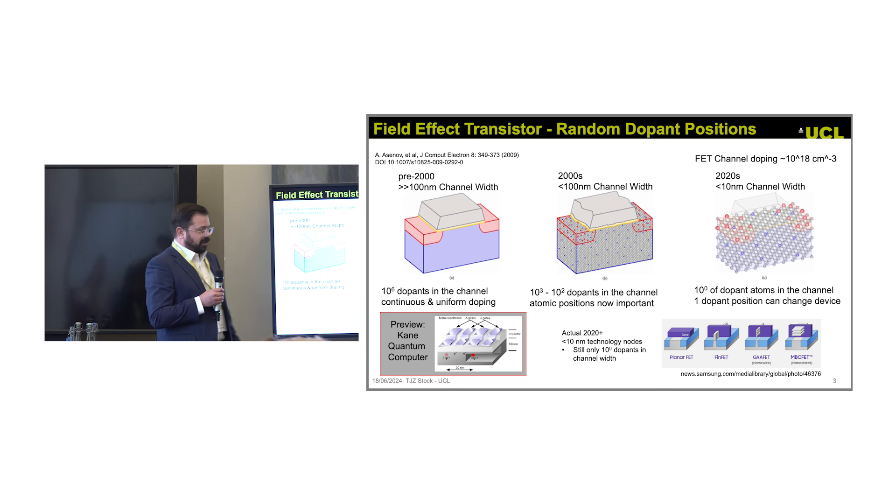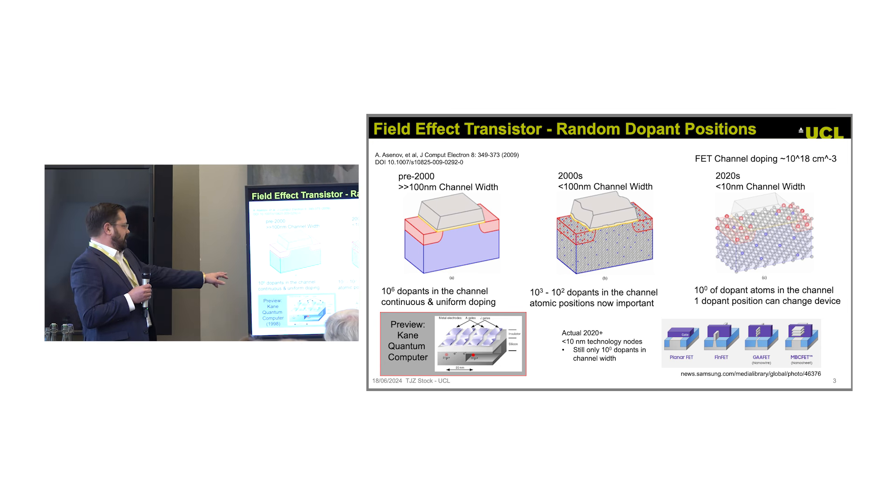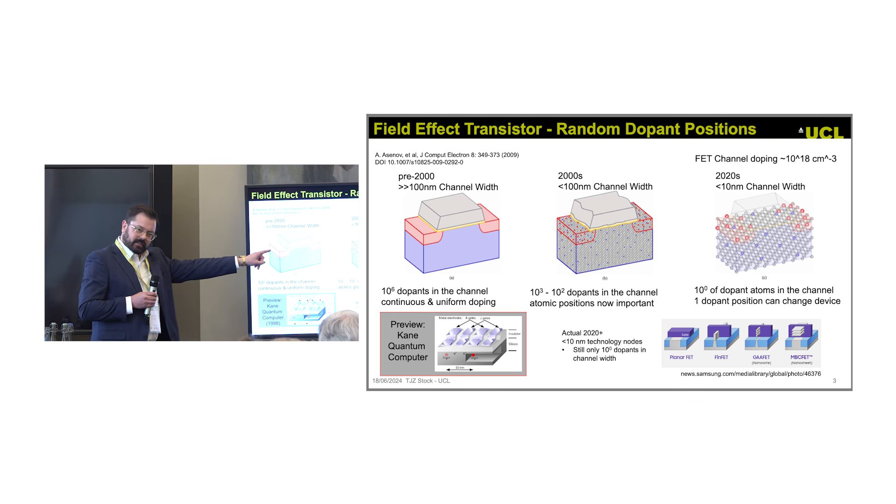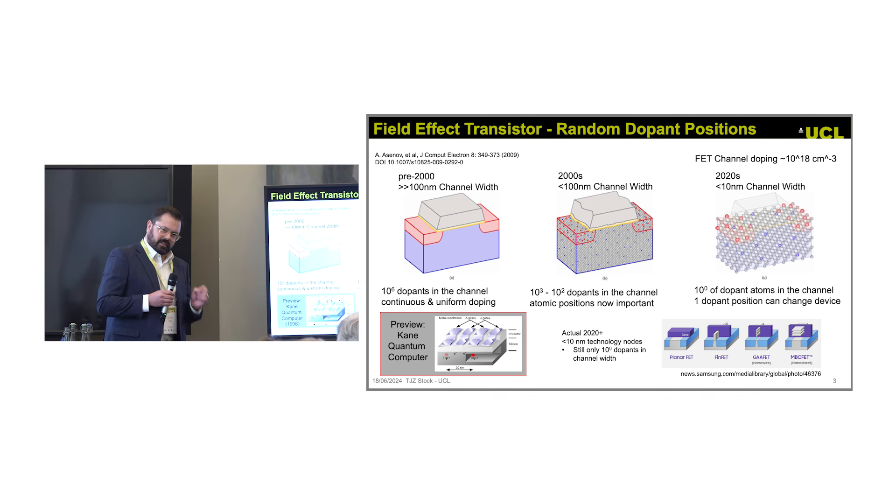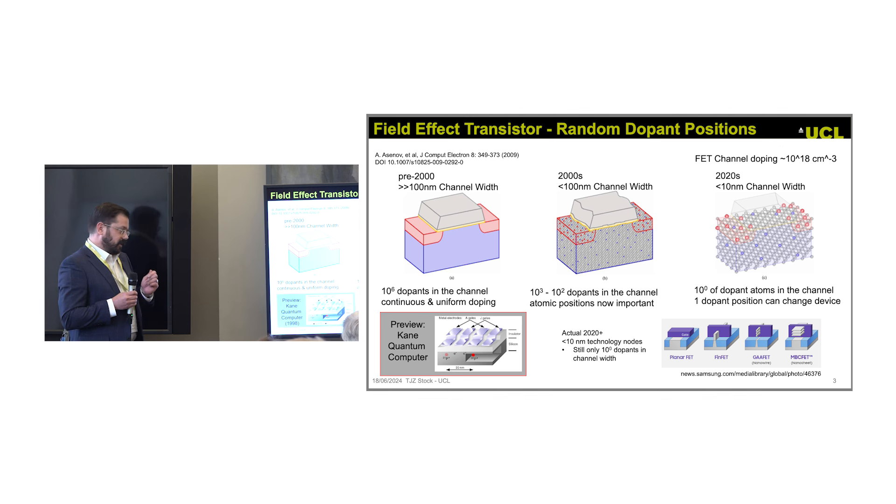But this doesn't have to be just a problem, right? We're getting down to the level where we've got individual dopants in the channel, and we can exploit this. This is a quick preview: I'm going to talk to you about this Kane quantum computer proposal, which looks similar to a field effect transistor with few dopants in the channel. We're going to exploit using individual dopants in our transistor.